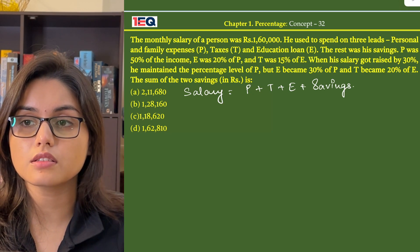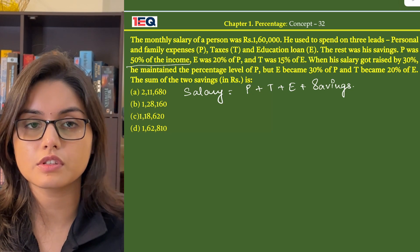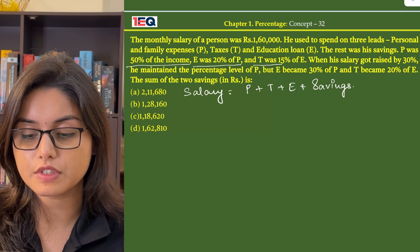Now they say P was 50% of his income. P is equal to 50% of his income. E was 20% of P and T was 15% of E.